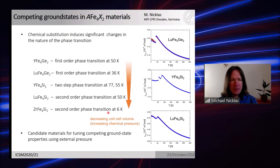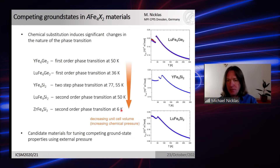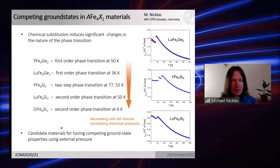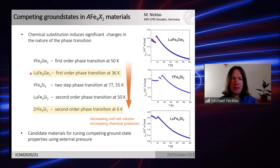ZrFe4Si2 shows a second-order phase transition at rather low temperature of 6 Kelvin, making it likely that one can suppress it to zero temperature and find a quantum critical point. Importantly, this transition seems not to be accompanied by a structural transition. We have several candidate materials for tuning competing ground states; I will focus on LuFe4Ge2 and ZrFe4Si2.